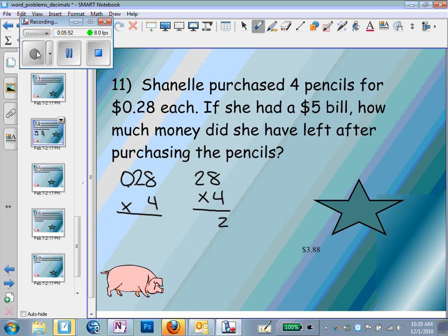8 times 4 is 32. 2 times 4 is 8. 8 plus 3 is 11. And now we have to deal with the decimal. So in 0.28, our decimal is over two places. We're going to move our decimal over two places in our answer. So that means it costs $1.12 for all four pencils.